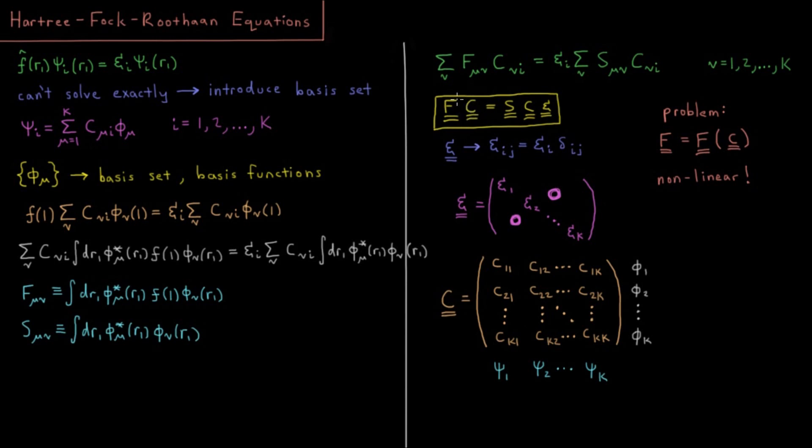In effect, we have a chicken and egg problem here in terms of which one comes first. We need to solve FC equals SCE. We don't have F, we don't have C, and we don't have E. All we have at the beginning is S. So this is a problem, and this is a nonlinear set of equations. The next few videos will be how do we go about getting solutions to this set of equations which give us some sort of foothold to actually solve them for what the actual orbitals and orbital energies in Hartree-Fock are.